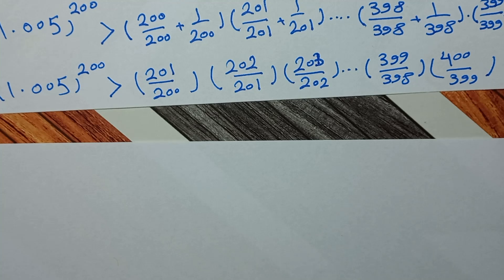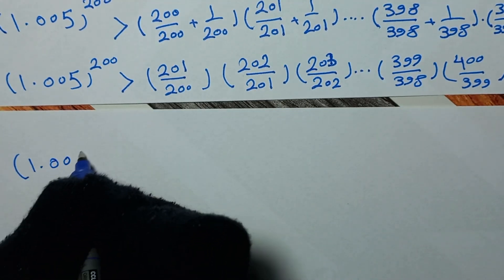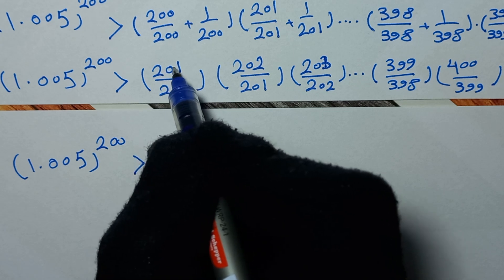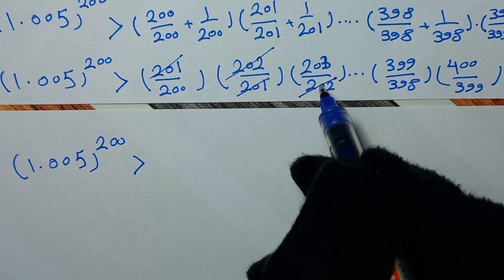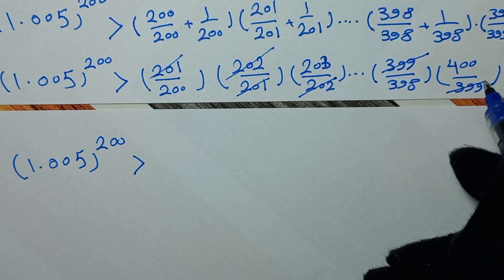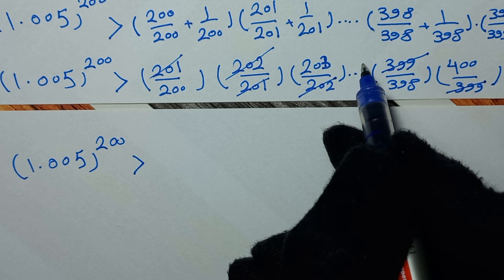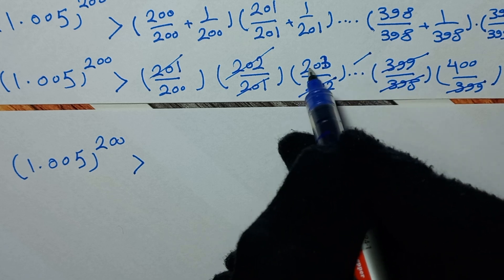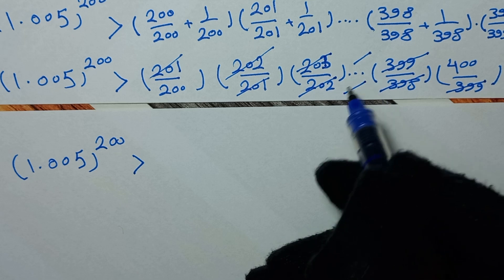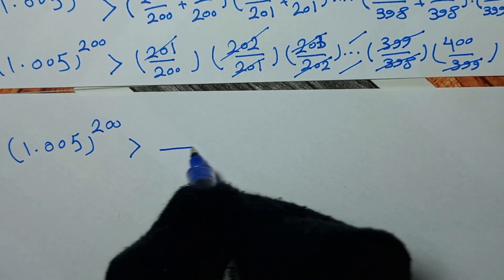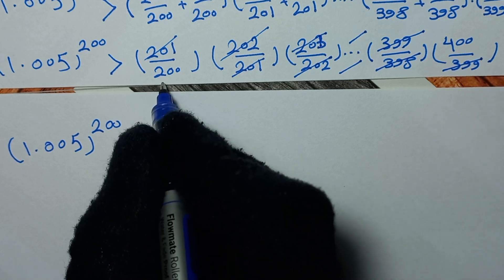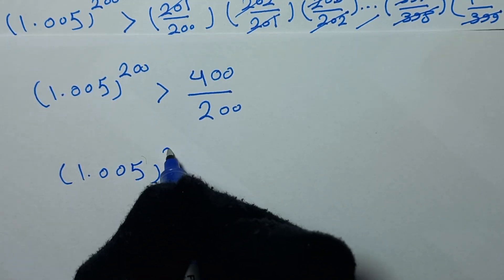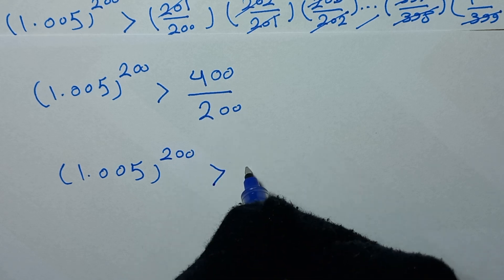This is a telescoping product. The 201 in the numerator cancels with the 201 in the denominator of the next fraction, 202 cancels with 202, and so on — all intermediate terms cancel. We are left with 400 in the numerator and 200 in the denominator, giving 400/200 = 2. Therefore, 1.005^200 is greater than 2.